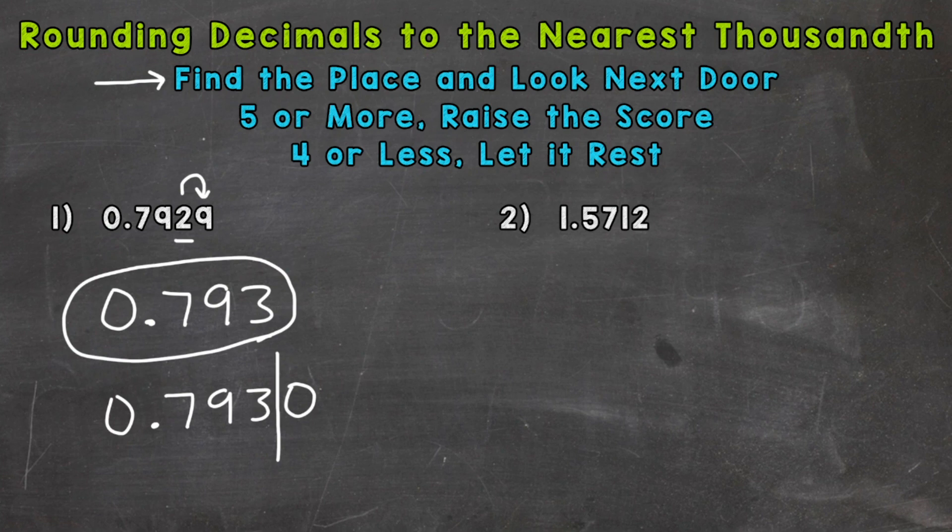So let's move to number two where we have 1.5712. So let's find the place that we are rounding. It's the thousandths and we have a 1 there. We need to look next door.